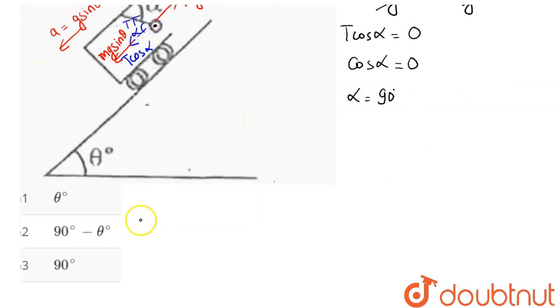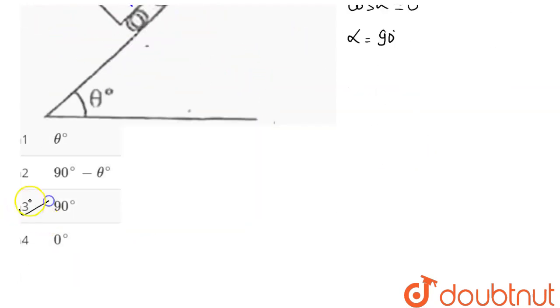So amongst the four options, alpha angle equals 90 degrees, which is option number 3. Hence 3 is the correct answer.